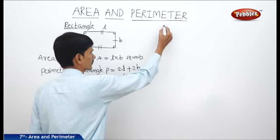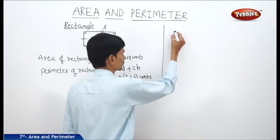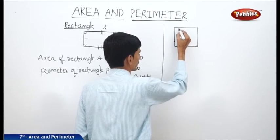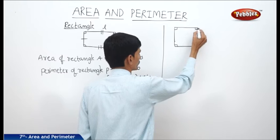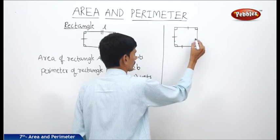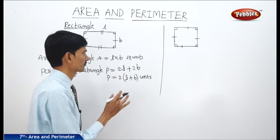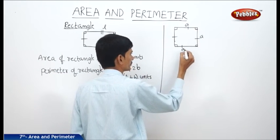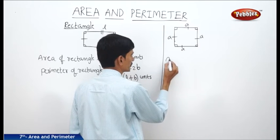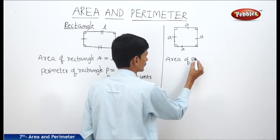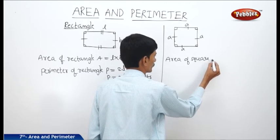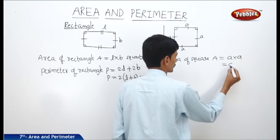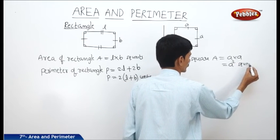Now the square. In a square, all four sides are of equal length. The side of the square is denoted by A. The area of the square equals side into side, so A equals A squared square units.